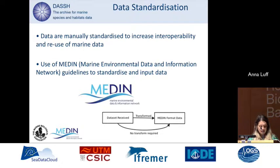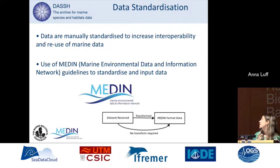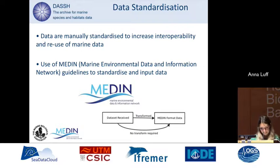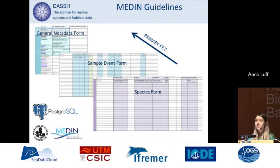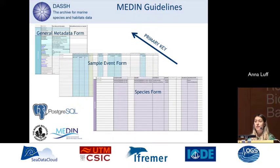The first step following data acquisition is to standardise our data, to increase interoperability and reuse of marine data. We use the Medin guidelines, which are available on the Medin website. They are an Excel representation of our Postgres database, with all worksheets linked together using primary keys. A species record in the species form can be linked to an individual sample event, to associated detailed metadata on methodology, and back to general metadata on the survey. We can also store data such as particle size analysis and biotopes, all linked back to individual sample events.